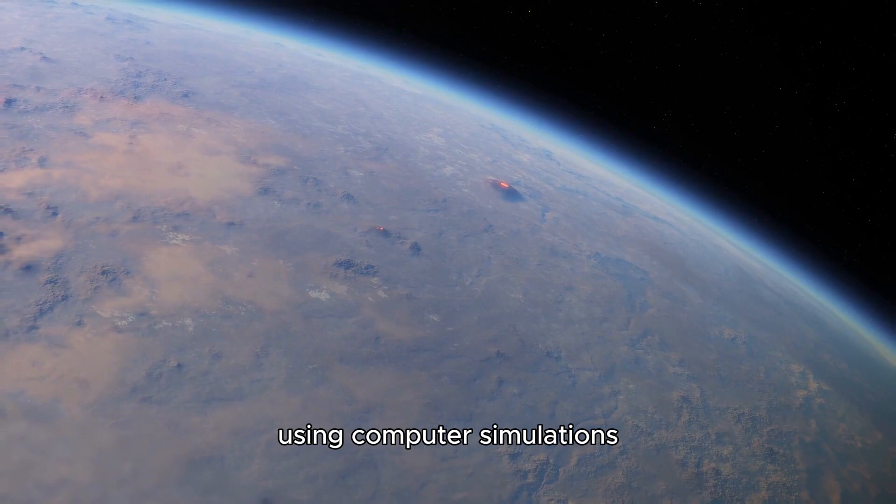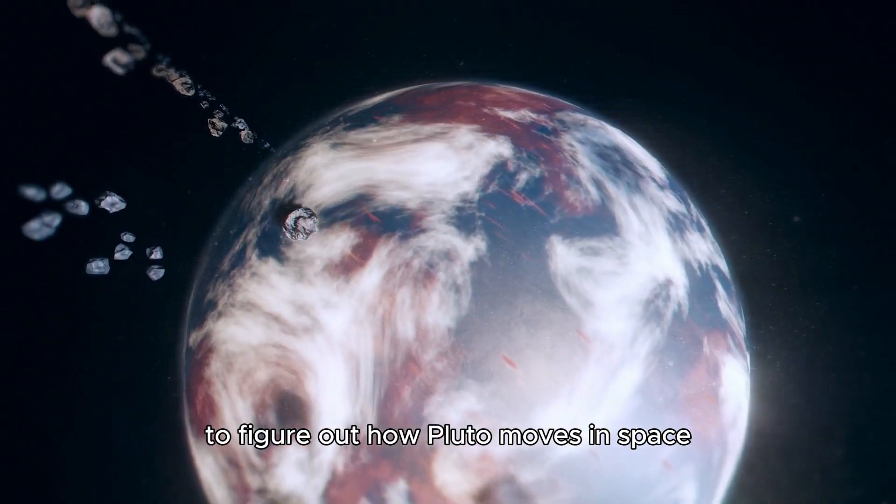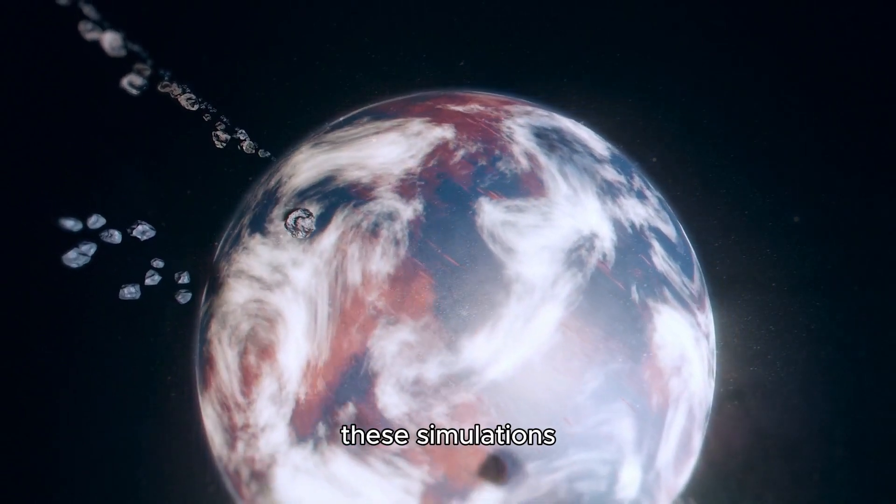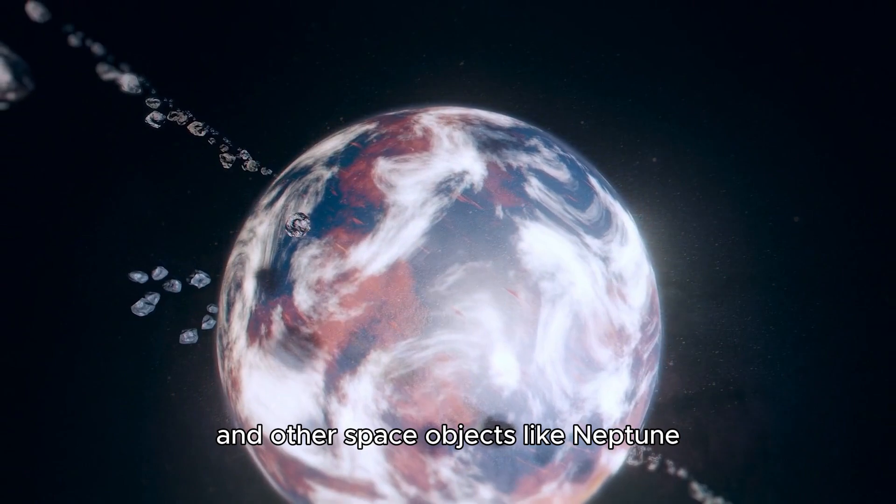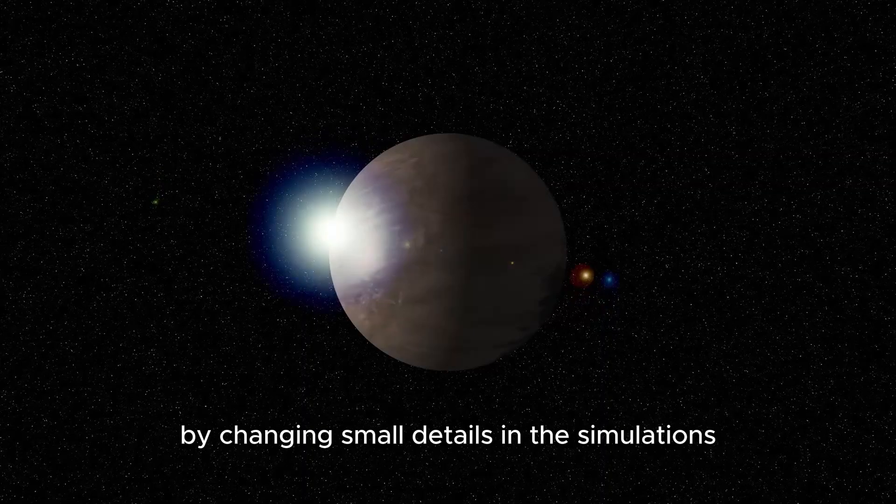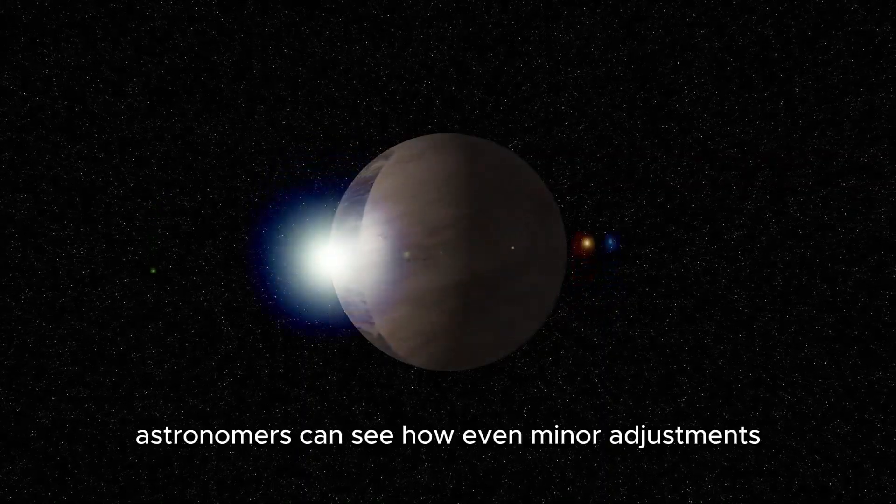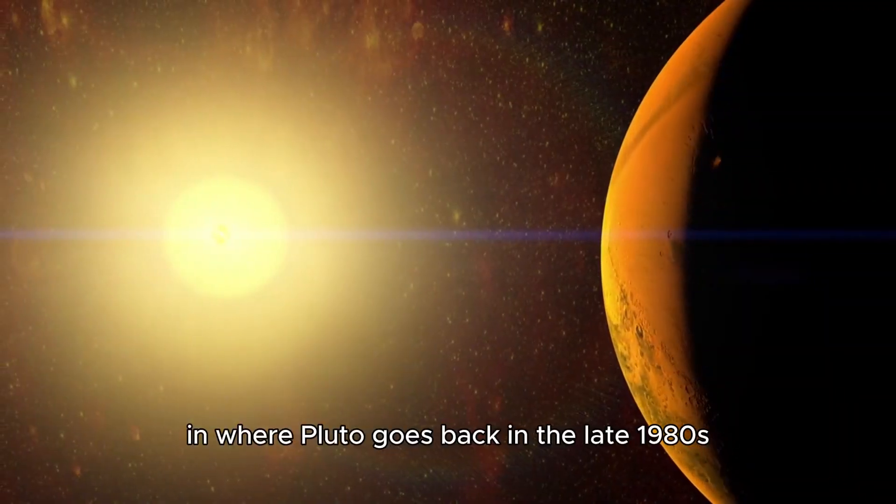Using computer simulations has been extremely useful for scientists to figure out how Pluto moves in space. These simulations use complex math to replicate how Pluto and other space objects like Neptune pull on each other. By changing small details in the simulations, astronomers can see how even minor adjustments can make a big difference in where Pluto goes.